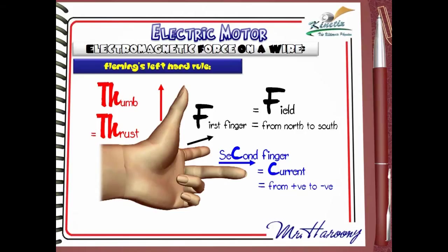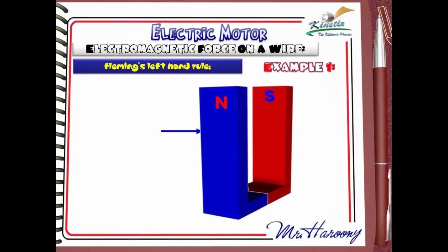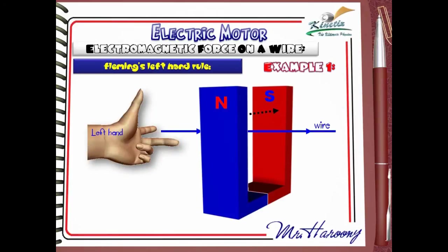Example 1: here is the magnet and the wire. Press the pause button if you want to think about the answer yourself. The dotted black arrow shown indicates the direction of the magnetic field from north to south. This is how Fleming's Left Hand Rule is applied — the first finger points with the magnetic field direction from north to south, in this case pointing inside the page.